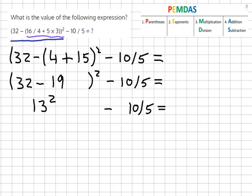Now we're done with the parentheses. We can move on to the exponents, and we have one which is 13 squared. 13 squared equals 169 minus 10 over 5. From there we can do the division.